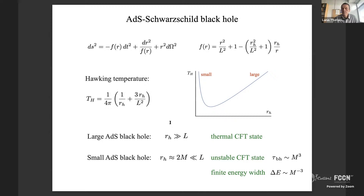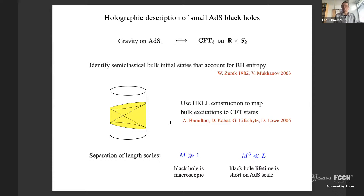The black hole lifetime should be short compared to the AdS length scale, so the collapse and evaporation process can be considered in a patch of AdS spacetime without worrying about what happens at infinity. Now I want to think about how to actually describe these black holes holographically. I can prepare a state with a shell of matter that undergoes collapse or a cloud of dust, and in some cases even find analytic solutions.